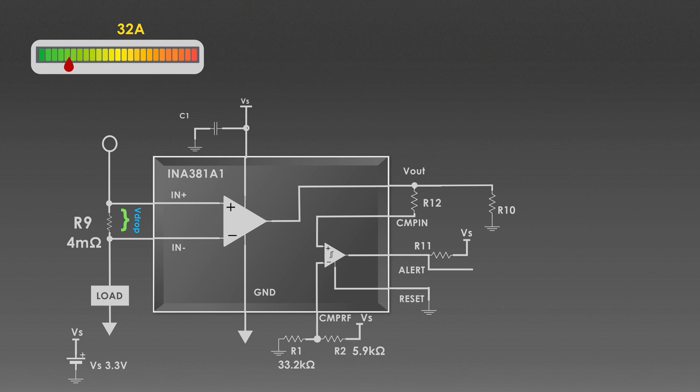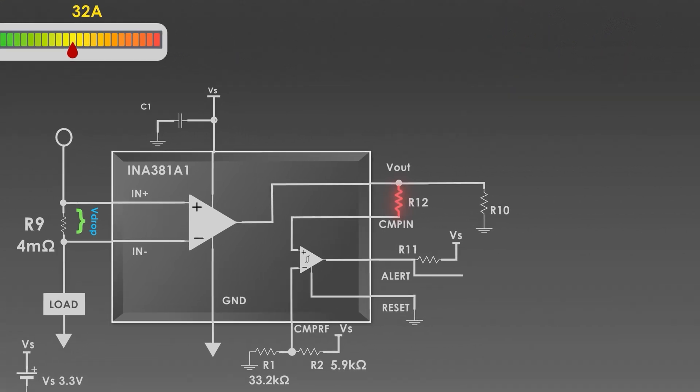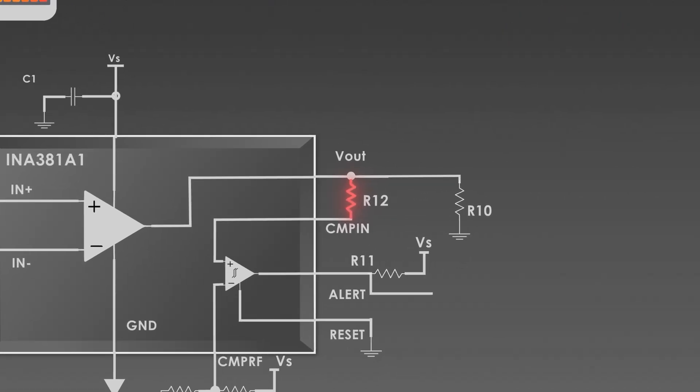This can be controlled by this resistor R12. If the current falls below 32 Amperes, then only the alert should turn off. Hence, we are giving margin of 3 Amperes to settle the output. For that, a resistor between comparator pin and Vout pin would work. Using this formula,